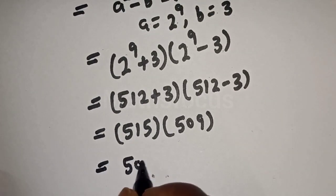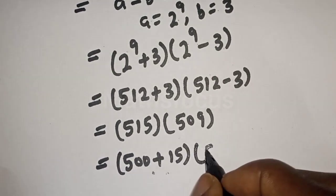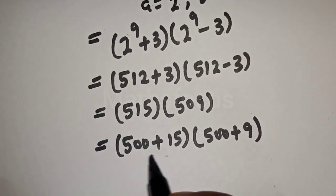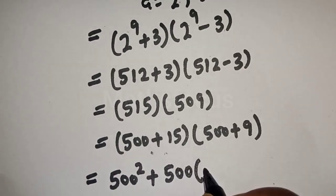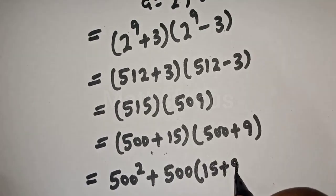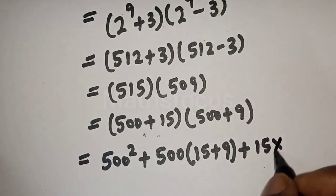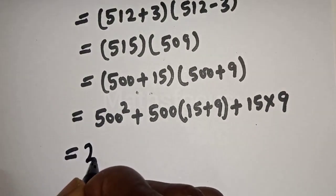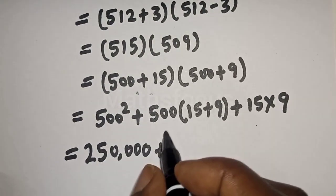Now this can be written as 500 plus 15 bracket 500 plus 9. Then let's multiply out. This is equal to 500 squared plus 500 bracket 15 plus 9 plus 15 multiply by 9.